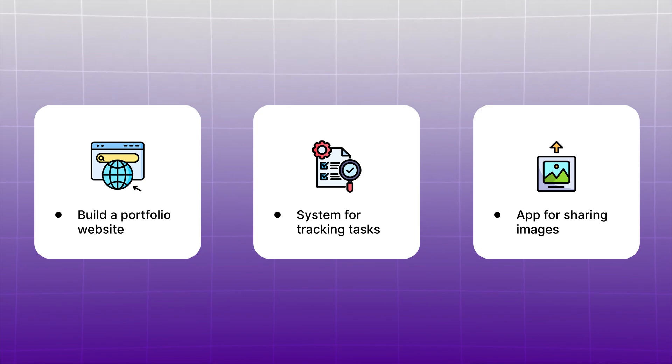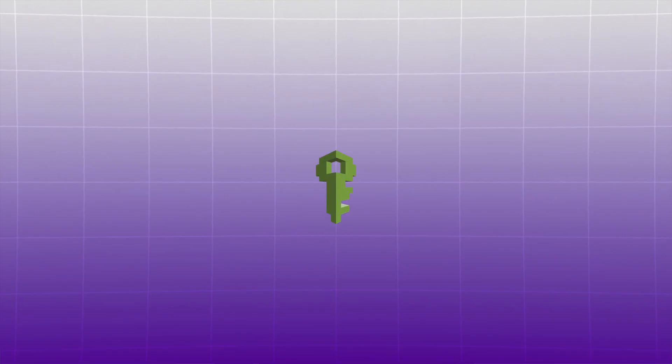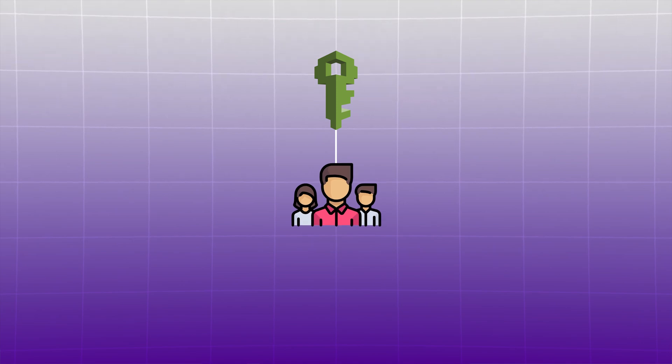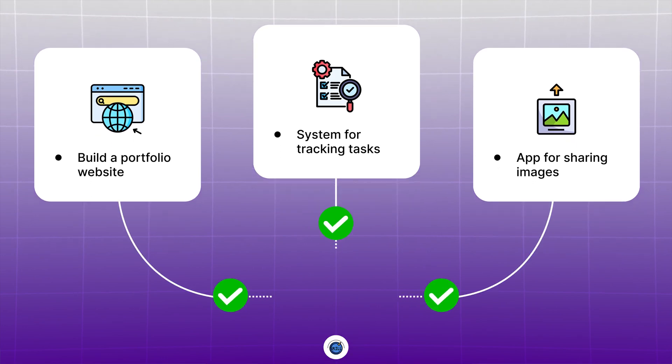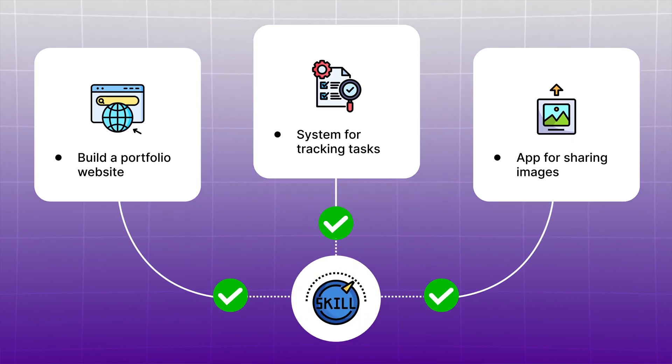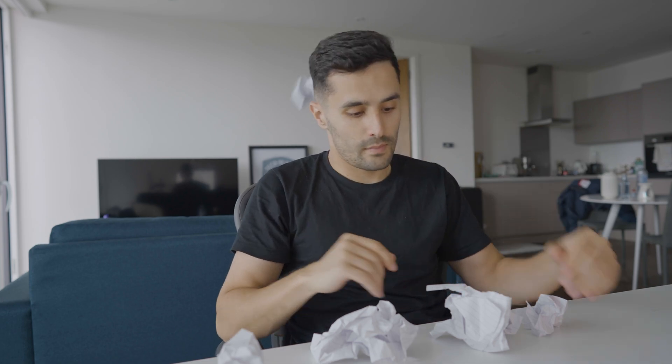The third project brings security into the picture: an app for sharing images. Store the images in S3, but the interesting part is controlling who can do what using IAM. You can set up rules so only certain users can upload or delete images, while others can only view them. This teaches you real-world security practices — something crucial in any cloud role. Each project teaches different skills, and solving the roadblocks you hit is where the real learning happens.